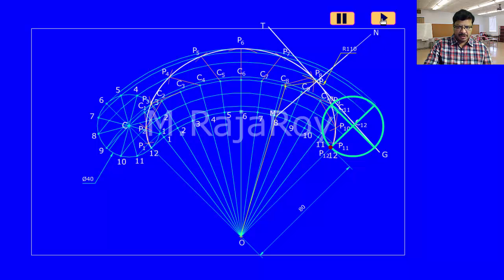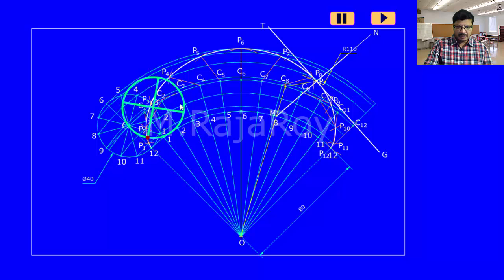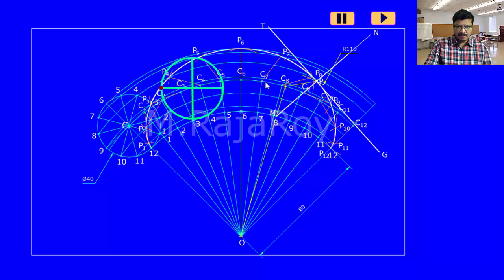Observe this animation carefully. Observe this starting point — now it is generating this epicycloid. Now observe the direction of rolling: the direction of rolling is clockwise, hence on this particular circle we give the numbering in the counterclockwise direction. It is rolling in the clockwise direction, so from the starting point you have to give the numbering in the counterclockwise direction — that is the reverse direction.